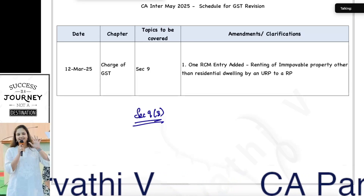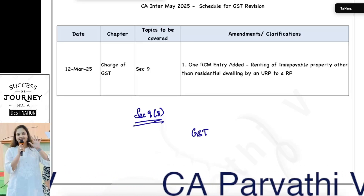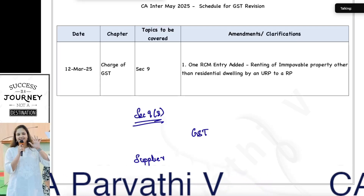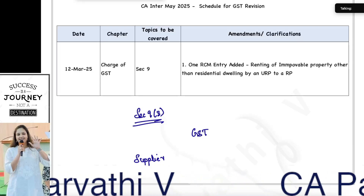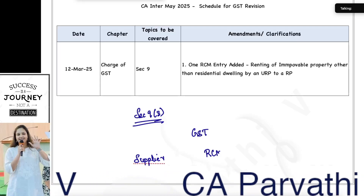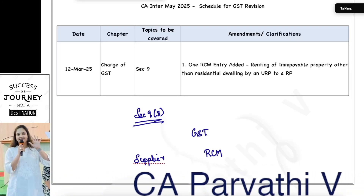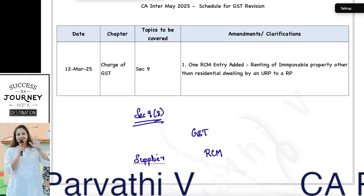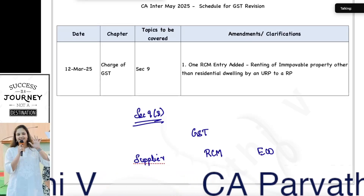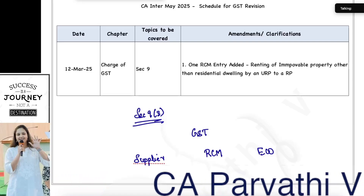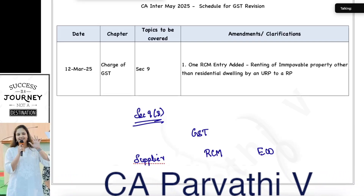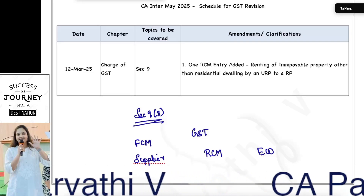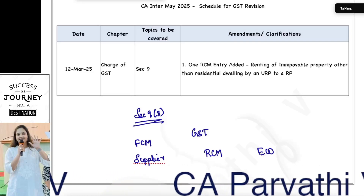Generally in GST, it is the supplier who is liable to pay GST to the government. In certain cases, GST is liable to be paid by the recipient under RCM. And in certain cases, it is to be paid by the e-commerce operator as per section 9.5. Generally it is forward charge mechanism wherein the supplier will be liable to pay GST to the government.